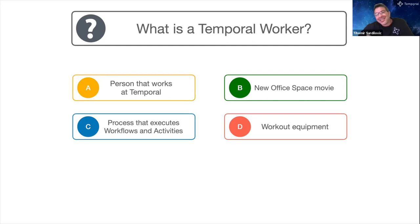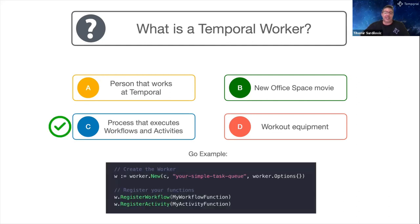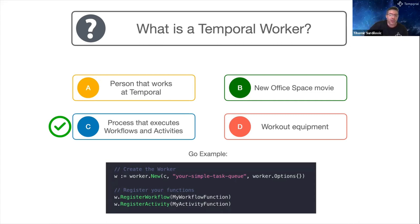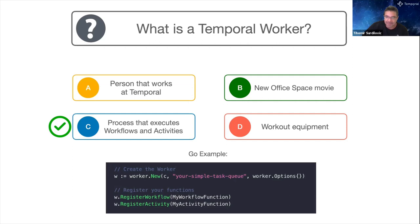If you answered C, you're correct. A Temporal worker is a process that executes your workflows and activities. Here's an example with our Go SDK where on the first line we define a new worker, pass in the task queue name, define workflow options, and then register workflows and activities.